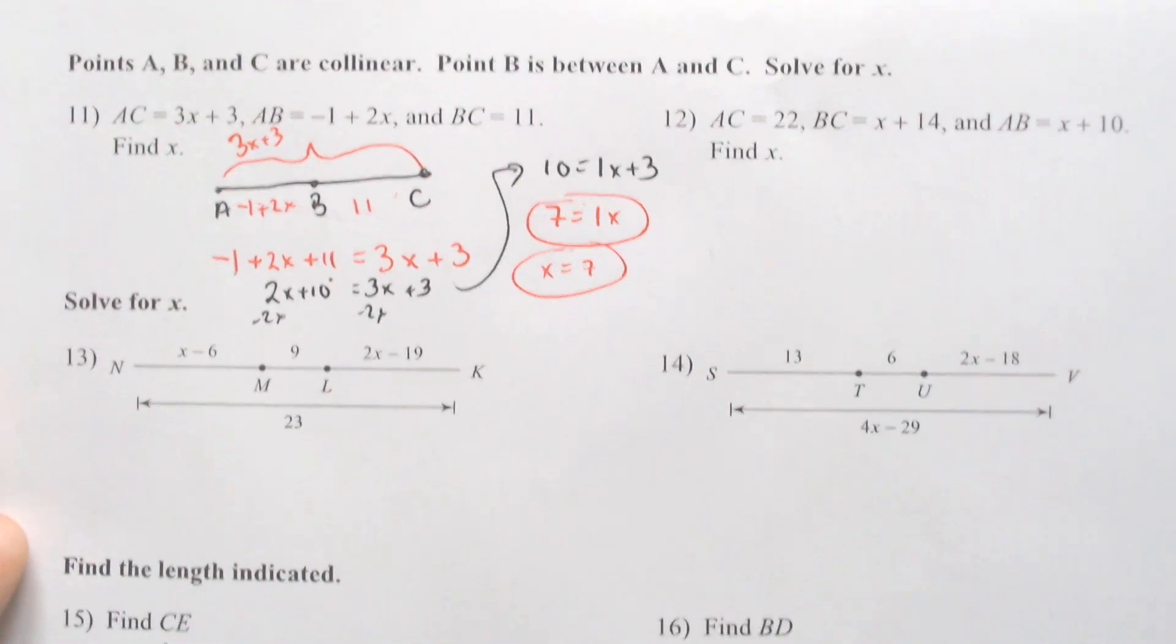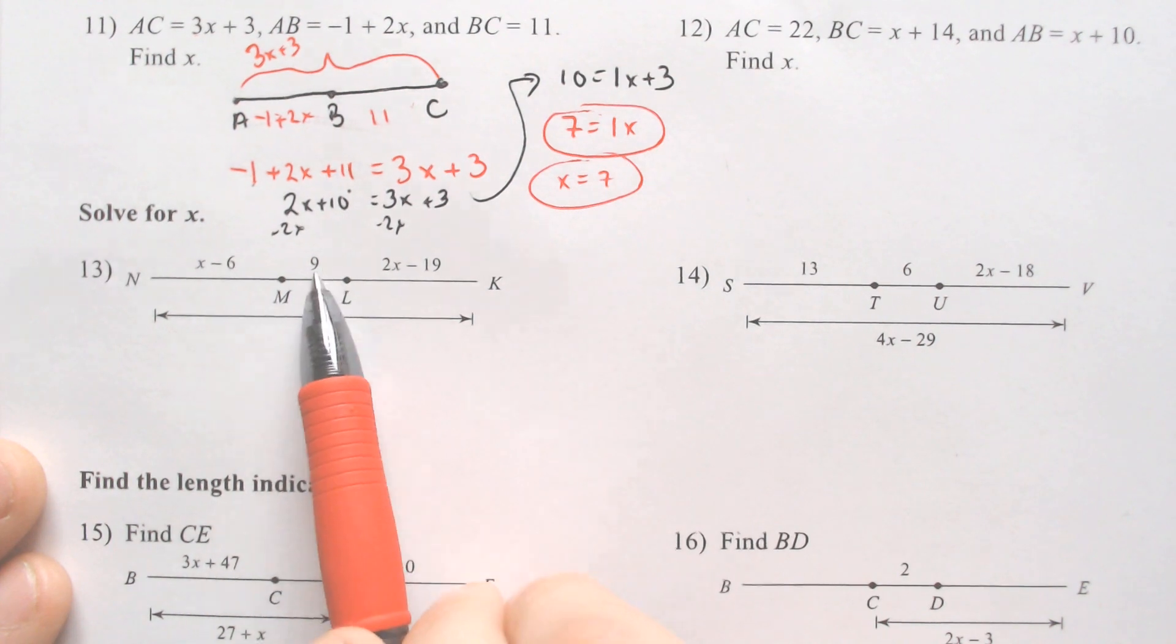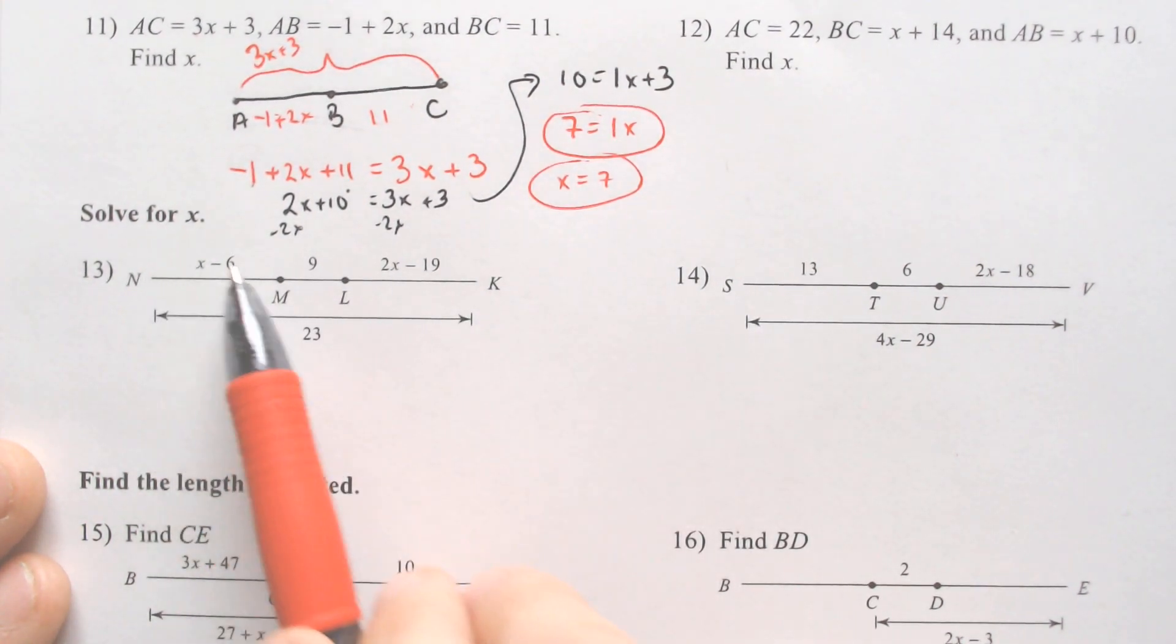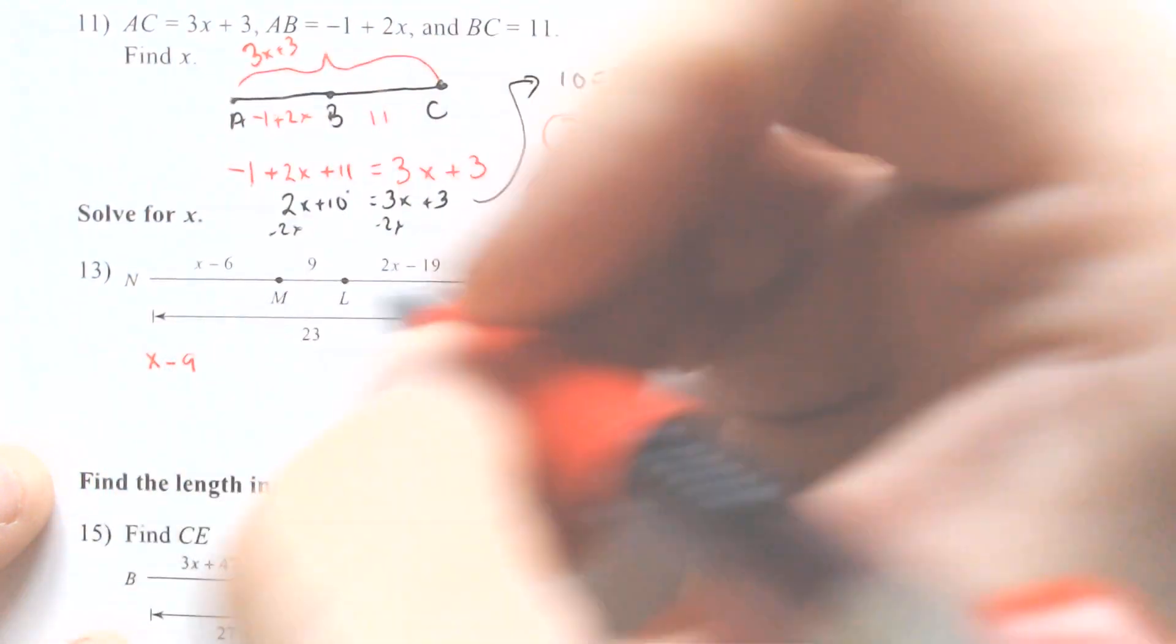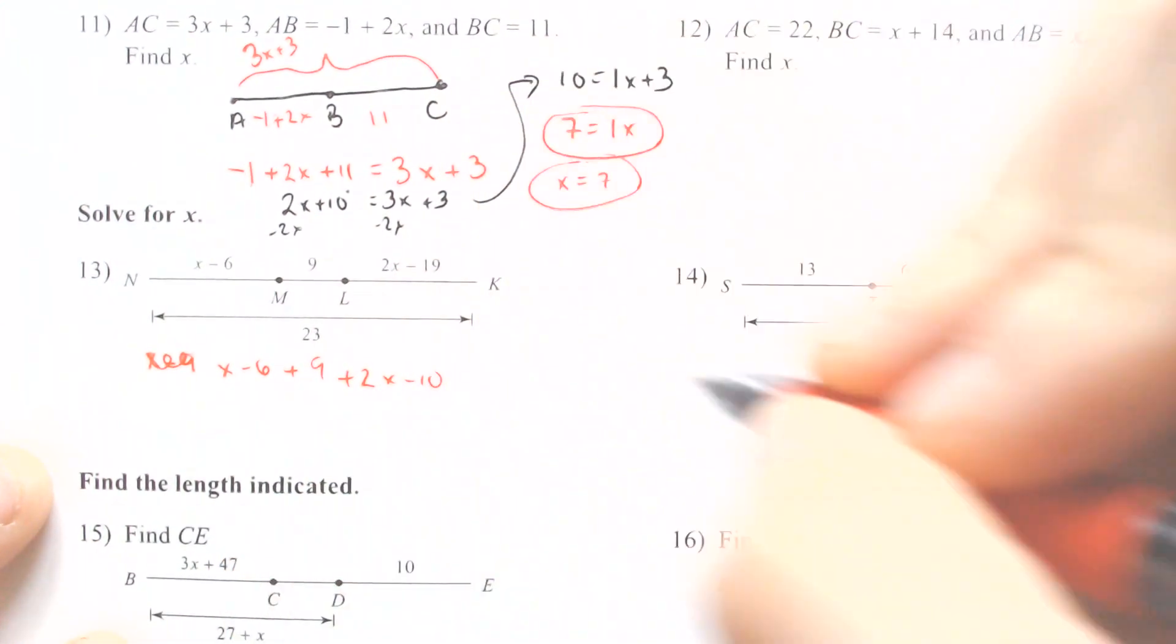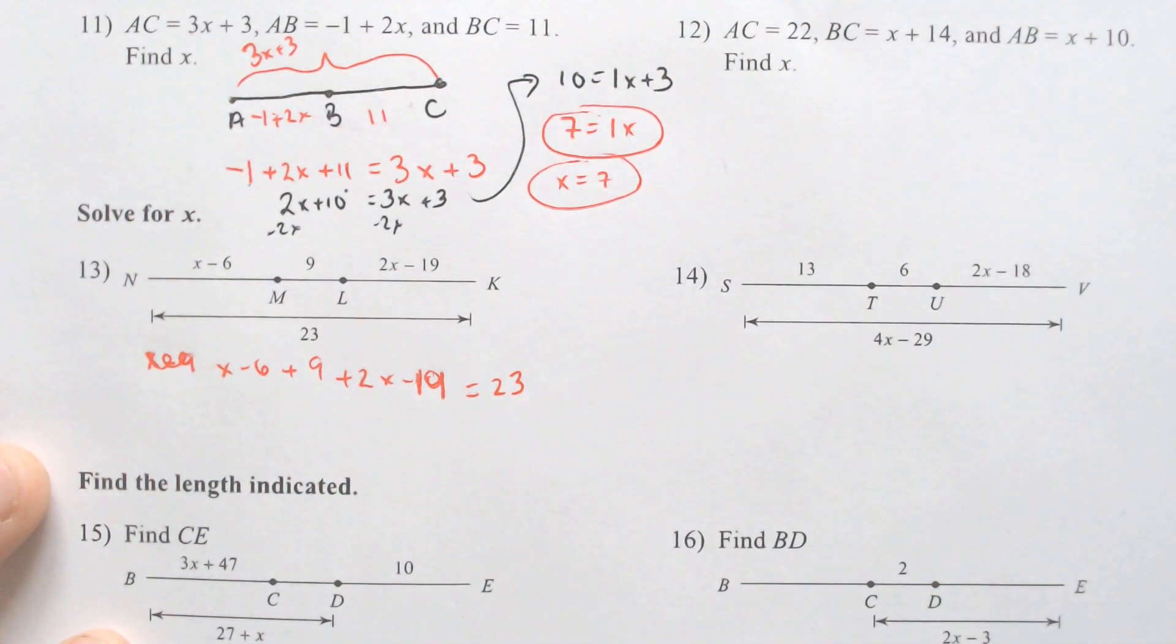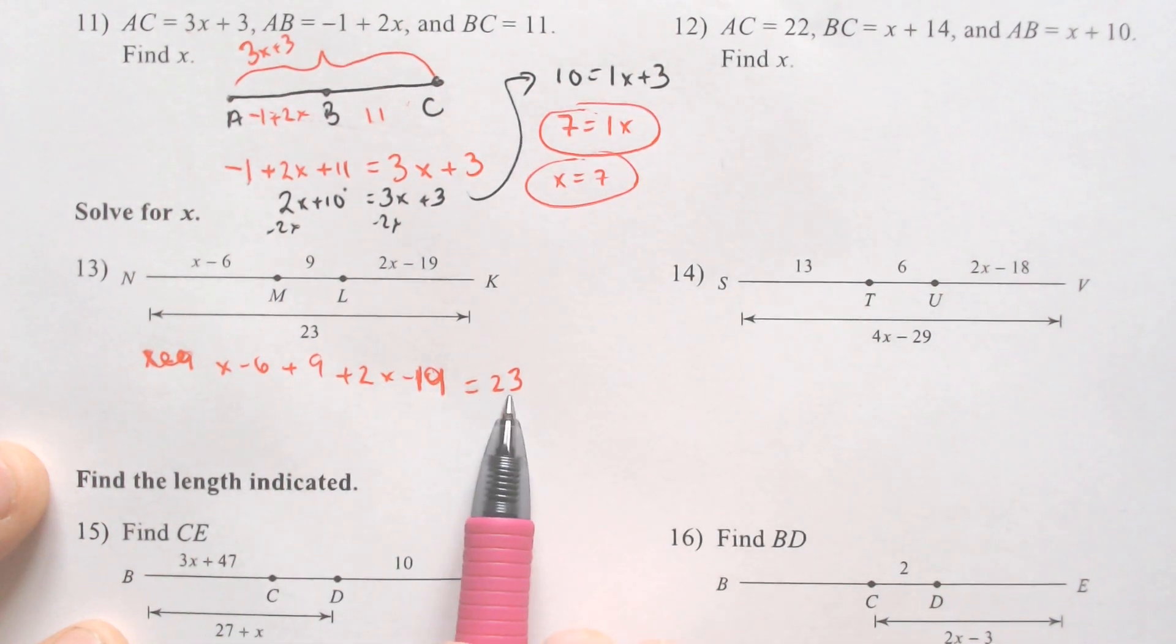Moving on, we might do two more. We got one, two, three things adding up to the entire way across. We have to add up these three segment additions to get the whole way across, thus doing the segment addition postulate. So, X minus 6 plus 9 plus the 2X minus 19 would equal 23. These three sections put together equal the 23.